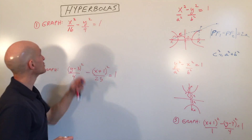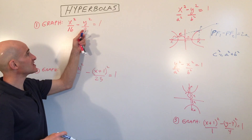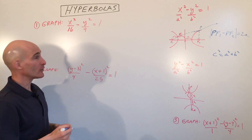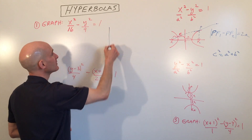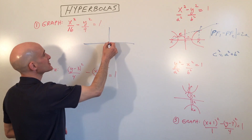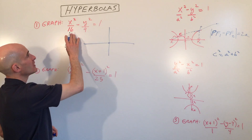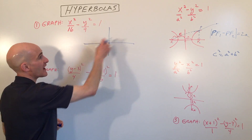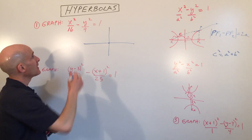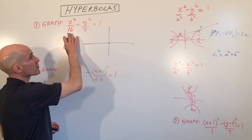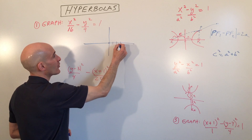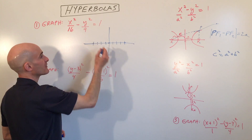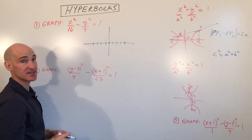Let's show you how to graph these. So x-squared over 16 minus y-squared over 9 equals 1. This one is centered at the origin. The x-squared is the positive term, so that tells us it's going to open in the x-axis direction, left and right. I'm going to go 4 — the square root of 16 — to the right; that's the vertex, and 4 to the left; that's the other vertex. So that's our a distance.